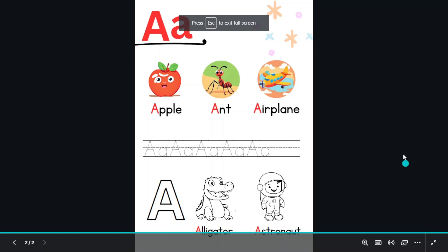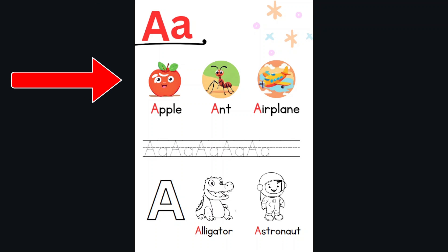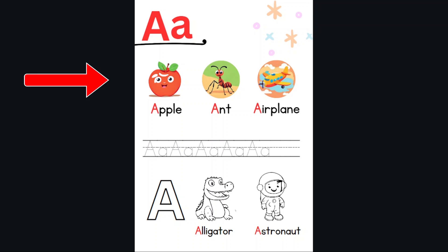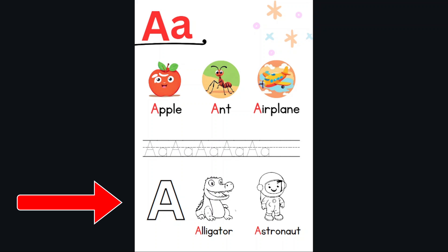We'll create pages like this example. Here on this page, I've started with the letter A, and then I added several useful and entertaining exercises for children to learn. We will divide the page into four sections. In the upper section, we'll put the name of the letter and some decorations. In the second section, we'll add three pictures with three words that begin with the same letter. In the third section, we'll include a letter writing training exercise. In the last section, we'll provide three new shapes for coloring.